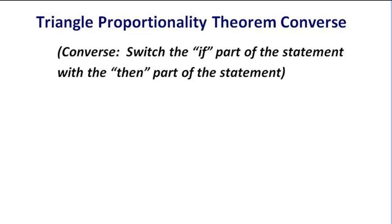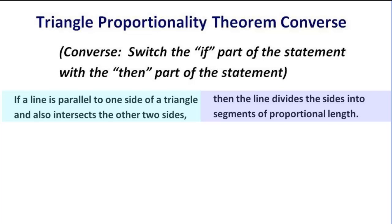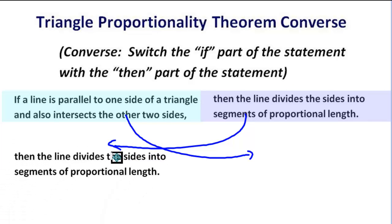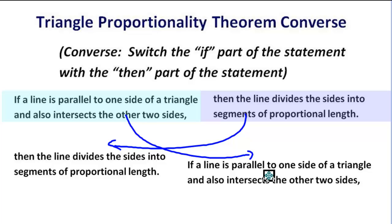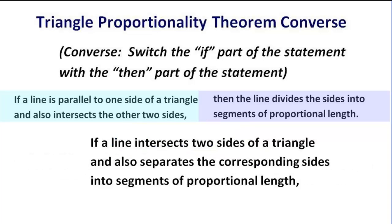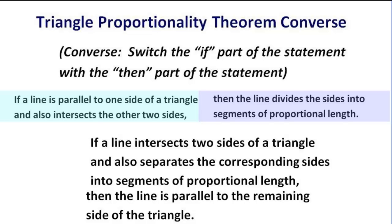So let's take a look at what we get by examining the converse of this theorem. If we were going to find the converse of this theorem, we would want to take the last part of the statement and bring it to the front, and take the front part of the statement and bring it to the end. As a result, our statement, this could be a little goofy at first, but this would now read as the if, and this would now read as the then. It basically now says, if a line in a triangle divides the sides of the triangle into segments of proportional length, then the line is parallel to one side of the triangle. Put another way a little more eloquently, if a line intersects two sides of a triangle and also separates the corresponding sides into segments of proportional length, then the line is parallel to the remaining side of the triangle.